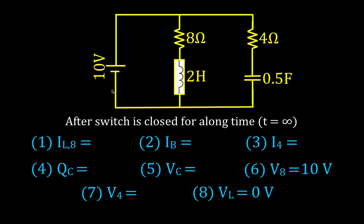From Kirchhoff's voltage law: a gain of 10 volts and a drop of 10 volts equals zero. There's now no resistance to the change in current from the inductor, so the current is simply voltage divided by resistance — 10 divided by 8 — giving a current of 1.25 amperes through this branch.